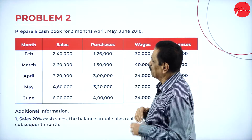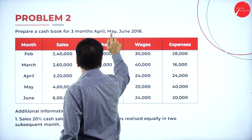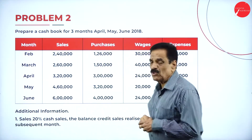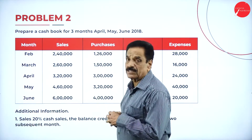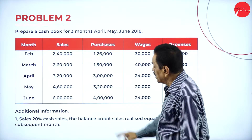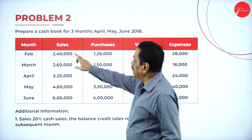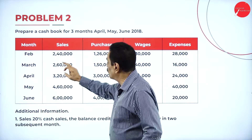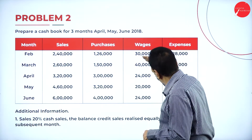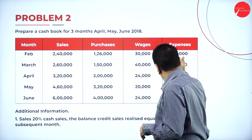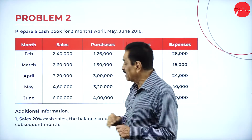Now, prepare a cash budget for three months: April, May, and June. Sales figures given are 2,40,000; 2,60,000; 3,20,000; 4,60,000; and 6,00,000. Purchase, wages, and expenses are also given. 20% is the cash sale received in the same month; the balance is credit sale collected equally over two subsequent months.